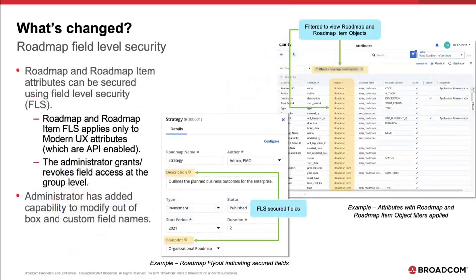Next, roadmap and roadmap item attributes can be secured using field level security. Roadmap and roadmap item field level security applies only to the modern UX attributes which are API enabled. Consistent with other field level security capabilities, the administrator grants or revokes field access at the group level or simply suppresses a field altogether. Administrators also have the added capability to modify out-of-the-box custom field names, but that topic will be covered tomorrow.